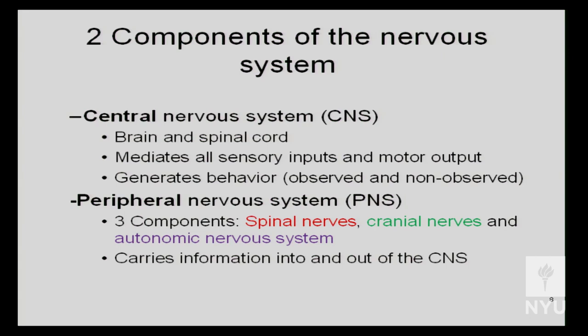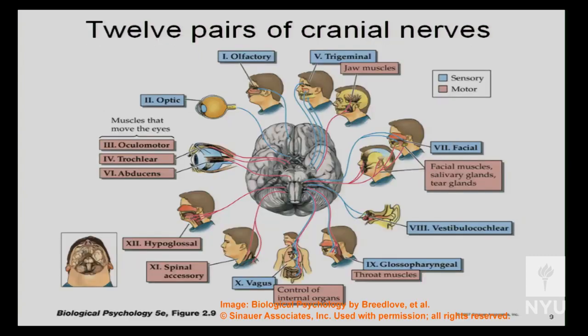Now let's talk about the cranial nerves innervating all these special senses. There are 12 pairs of cranial nerves, and you need to know each one by name and function. Cranial nerves are distinguished by two major features: all of them innervate the head and the neck, and their nuclei or cell bodies are not located in the spinal cord but in the brain and brain stem.